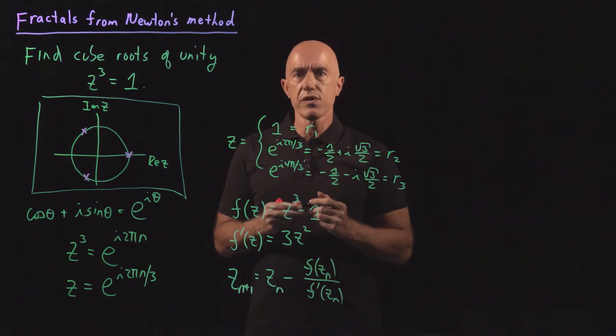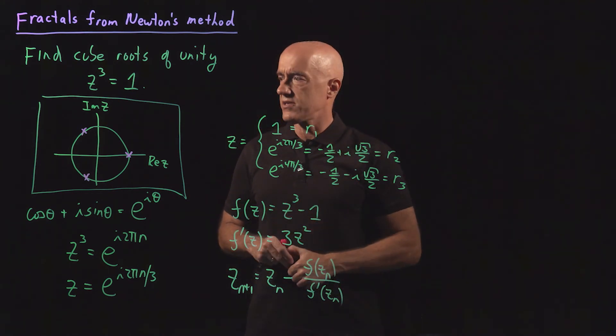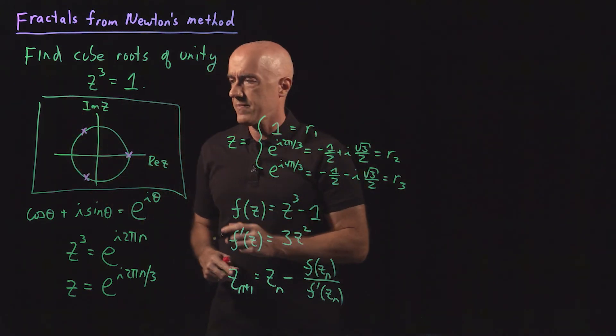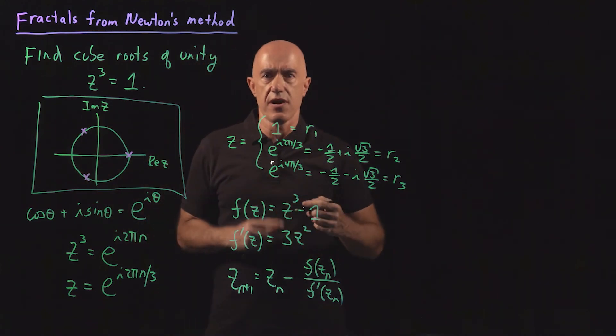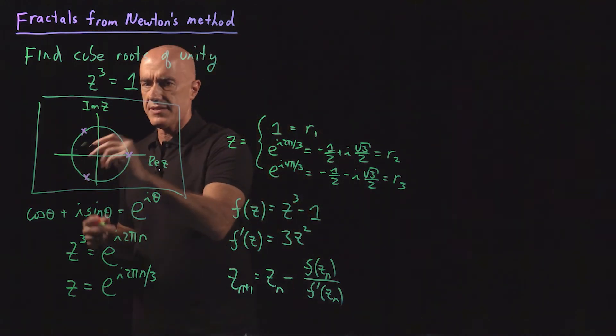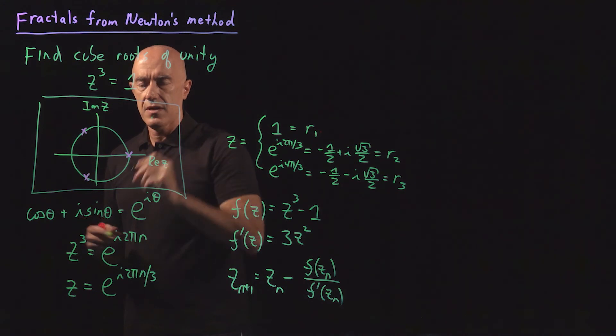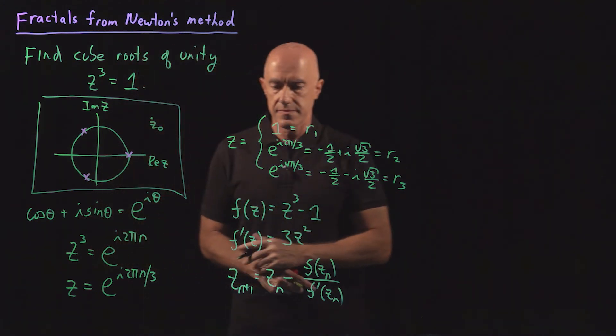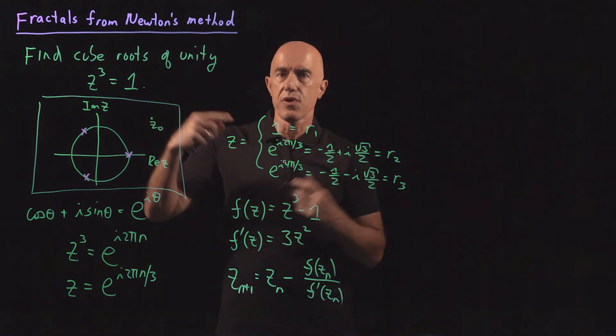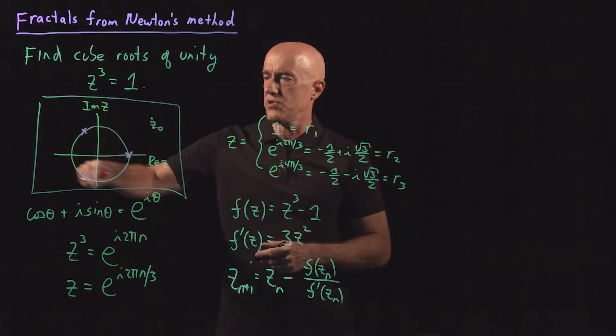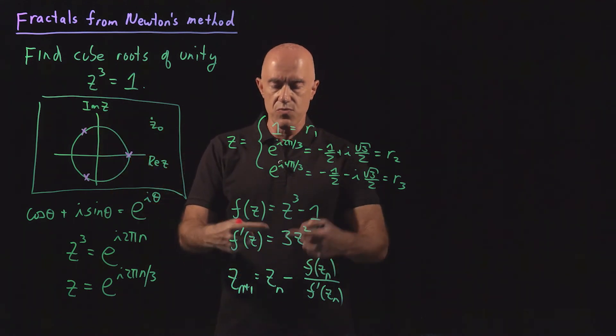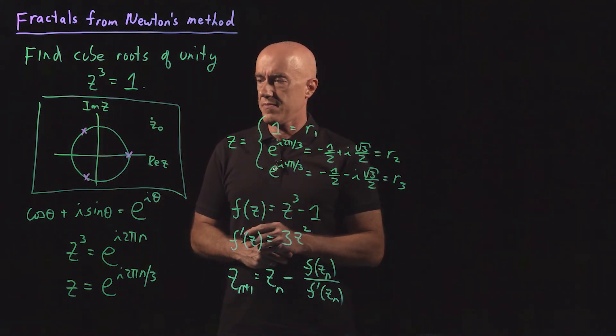So what we're going to do to generate our fractal is to grid up the complex plane. And at the center of each grid point, let's say for instance here, we're going to call that z naught. Then we're going to ask which cube root of unity will z naught converge to when we iterate Newton's method.